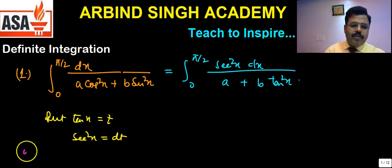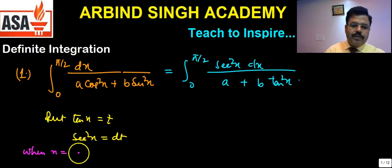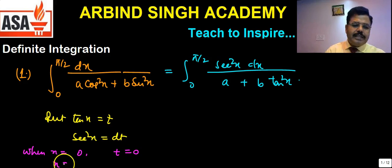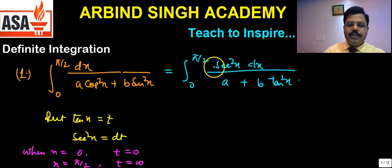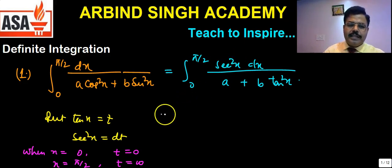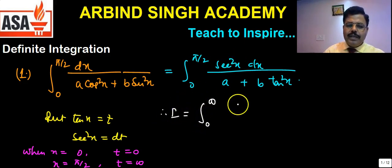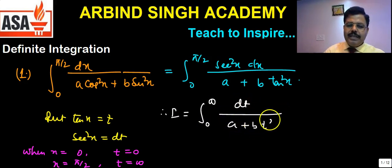When x = 0, tan0 = 0, so t = 0. When x = π/2, t approaches infinity. Therefore, I = integral from 0 to infinity of dt/(a + b·t²).